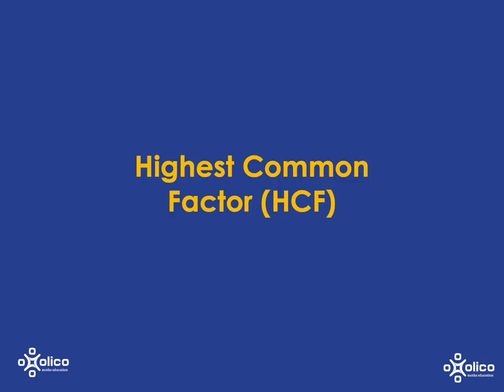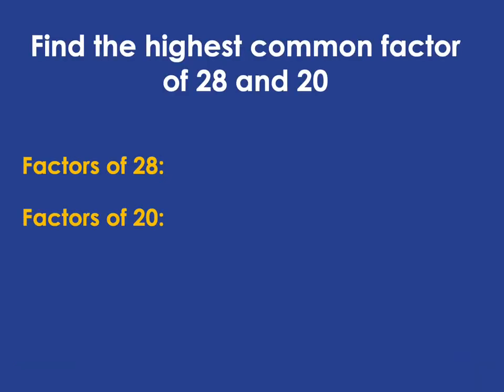We're going to look at the highest common factor through an example. If we're asked to find the highest common factor of 28 and 20, when we're talking about a common factor of 28 and 20, we're talking about a factor that 28 and 20 have in common — a factor that is a factor of 28 and is also a factor of 20. The highest means we're just going to look for the biggest of those.